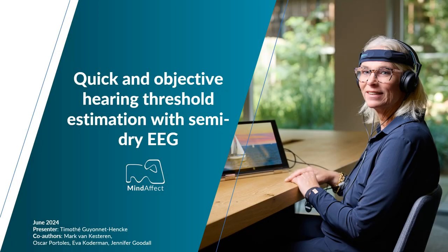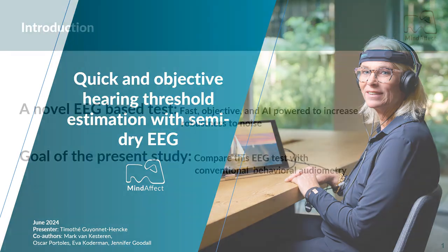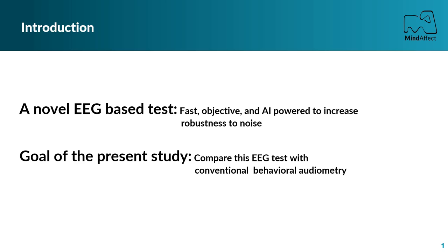We are pleased to introduce a new electrophysiology-based audiometric test using electroencephalography, or EEG. This innovative EEG test stands out from other electrophysiological audiometry methods, like ASSR or ABR, due to its quickness and strong robustness to noise. Along with its objective measurement capabilities, this new EEG method is a great alternative for diagnosing hard-to-test populations, such as young children and individuals with disabilities.